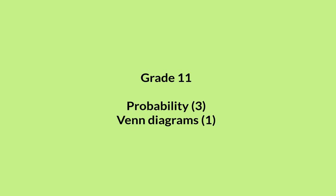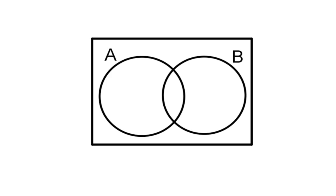In the next two lessons, we are going to have a look at how we can use Venn diagrams to determine our probabilities. In today's lesson, we are going to do an abstract example. Before we start with the example, I'm going to remind you of a few things.